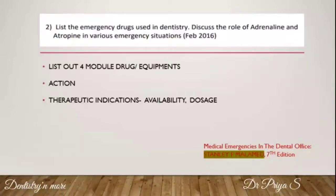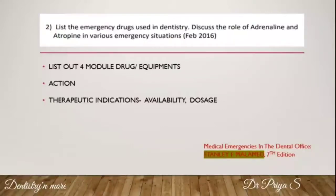For a question on emergency drugs — for example, discussing the role of adrenaline and atropine in various emergency situations — first list out all four modules of emergency drugs along with any equipment. Do not elaborate on each drug if the question is only about the modules. Then explain the pharmacological action of adrenaline and atropine, followed by their therapeutic indications, availability, and the dose given for each emergency situation.